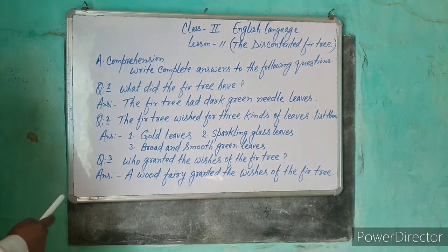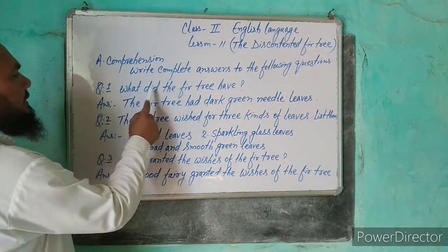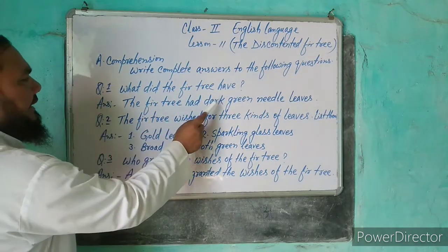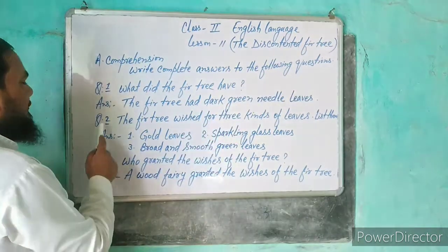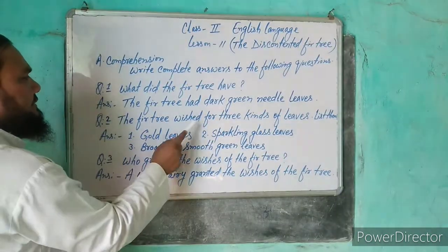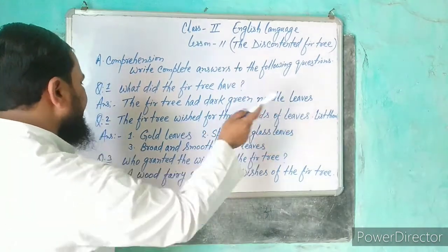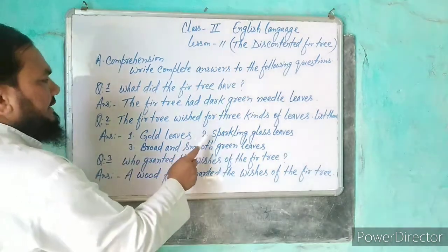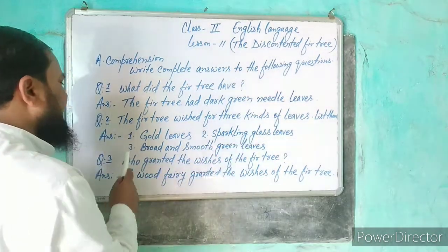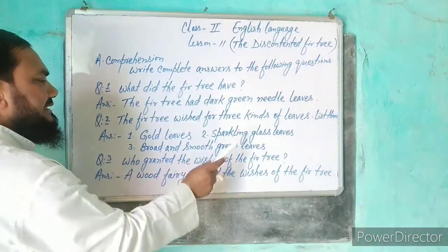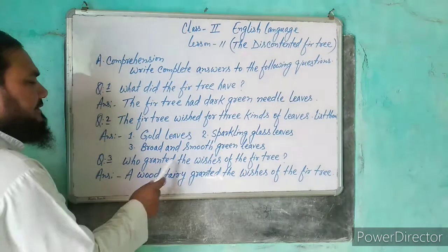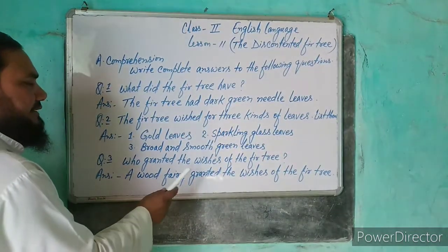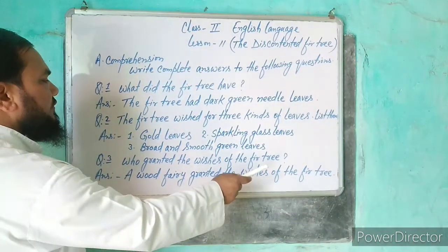एक बार फिर से हम तीनों questions देखते हैं। Question number 1: What did the fir tree have? Answer: The fir tree had dark green needle leaves। Question number 2: The fir tree wished for three kinds of leaves — list them. Answer: First, gold leaves; second, sparkling glass leaves; third, broad and smooth green leaves। Question number 3: Who granted the wishes of the fir tree? Answer: A wood fairy granted the wishes of the fir tree।